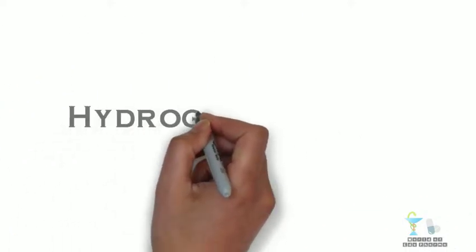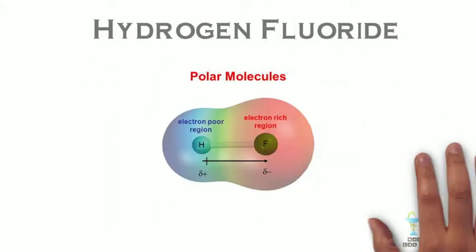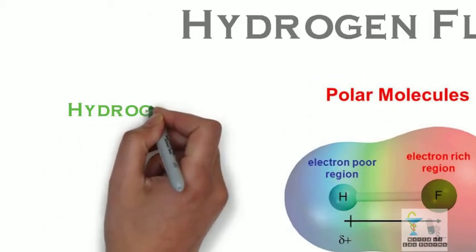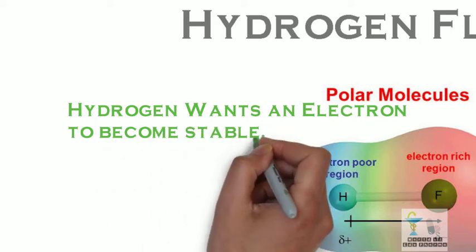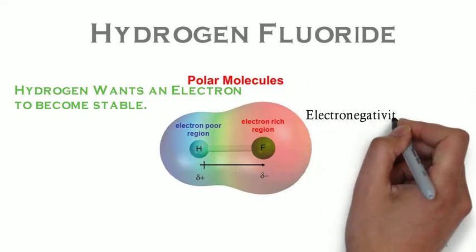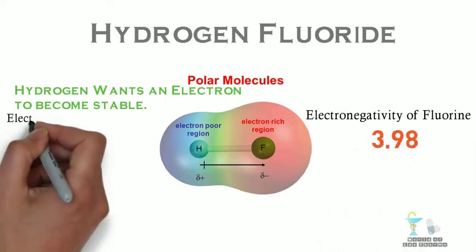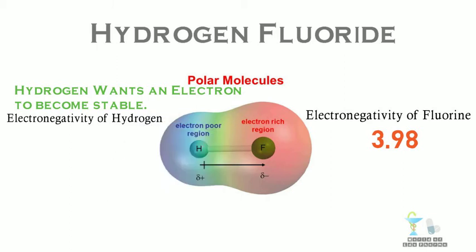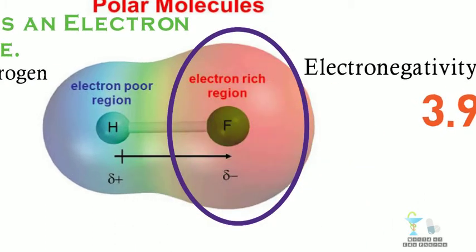Now let us consider the molecule hydrogen fluoride. In this molecule hydrogen wants an electron to become stable, the same case in that of fluorine. But the fluorine atom has high electronegativity which is 3.98 compared to the hydrogen atom which is 2.2, making the fluorine atom pull the electron towards itself. Because of this the electron cloud is bigger in fluorine when compared to hydrogen.